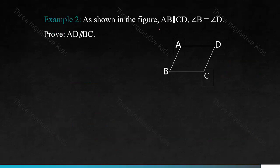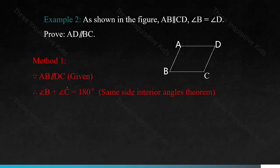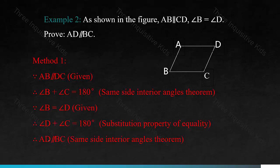Example 2: as shown in the figure, AB is parallel to CD, and angle B equals angle D. Prove AD is parallel to BC. There are multiple methods. Method 1: because AB is parallel to DC, therefore angle B plus angle C must equal 180 degrees — that's the same side interior angles theorem. Because angle B equals angle D, that's given, therefore angle D plus angle C equals 180 degrees, using the substitution property of equality. Therefore AD is parallel to BC, using the same side interior angles theorem.